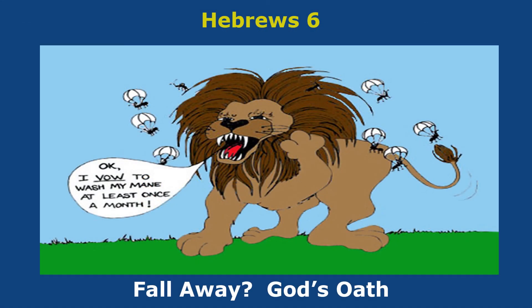Hebrews chapter 6. Chapter 6 is a bug scene, as there are six legs on a bug. 'Fall Away' are the bugs falling away by jumping off the lion's coat. 'God's Promise' is the lion promising that he will wash his mane from now on to get rid of the bugs.